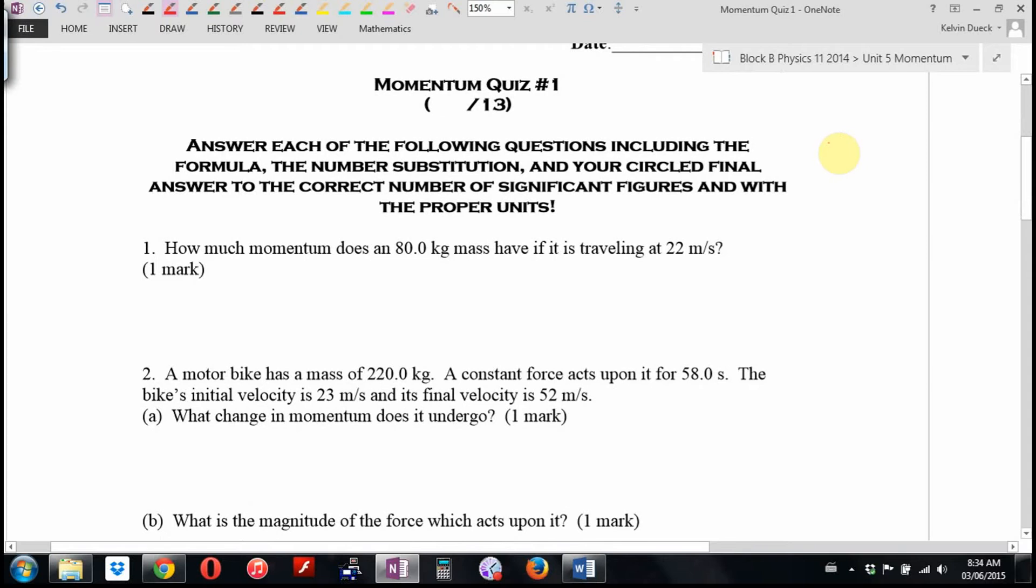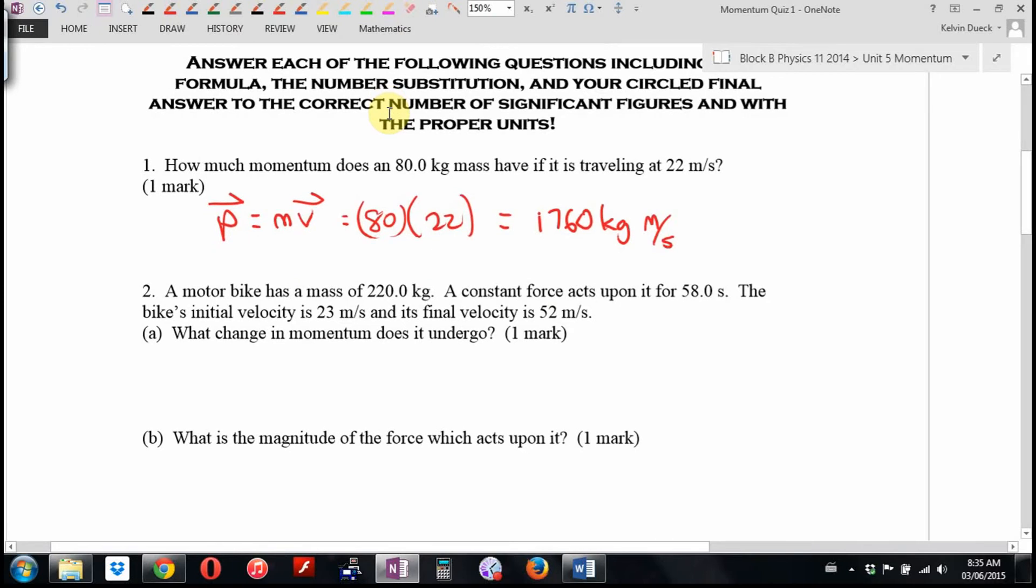Number one, how much momentum does an 80 kilogram mass have if it's traveling 22 meters per second? So this is straight plug and chug. You need to know that momentum is mass times velocity. I only asked for how much the magnitude, because even though momentum is a vector, I didn't give you any kind of a direction in this question. So it's going to be 80 times 22. Can I do that in my head? 80 times 20 is 160. It's going to be 160 plus 160. Wait, 1760 kilogram meters per second. Doing math in my head all proud and not quite so right. I got the 1760 part right. One mark.